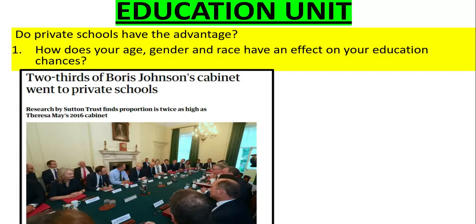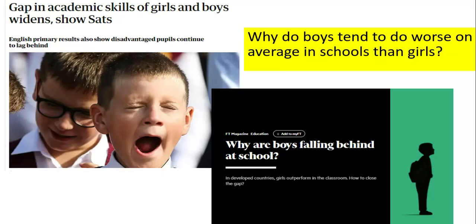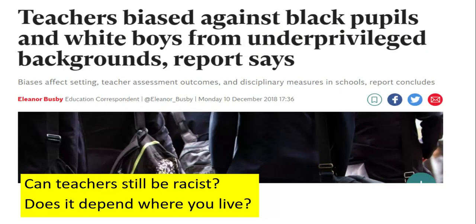The educational unit looks at aspects such as whether private schools have an advantage. We also look at gender differences — why do boys now tend to do worse than girls on average in school? And we look at whether teachers can still be biased against certain ethnicities, and whether it depends where you live.